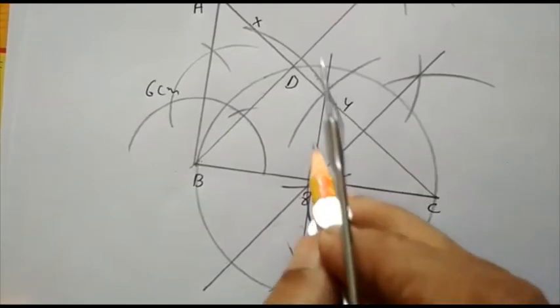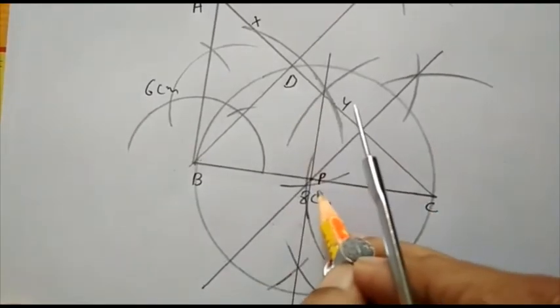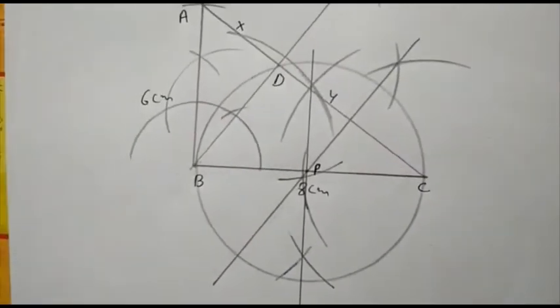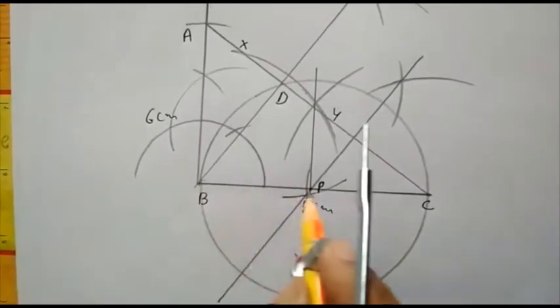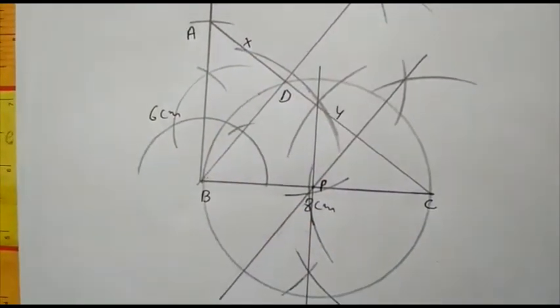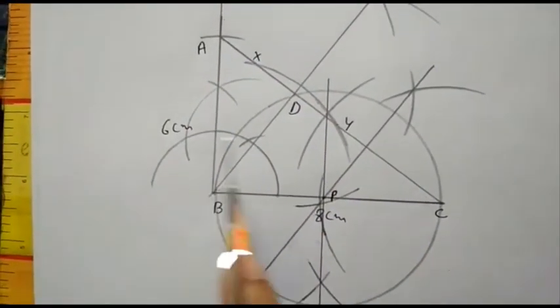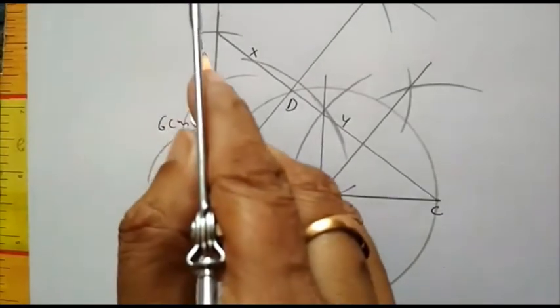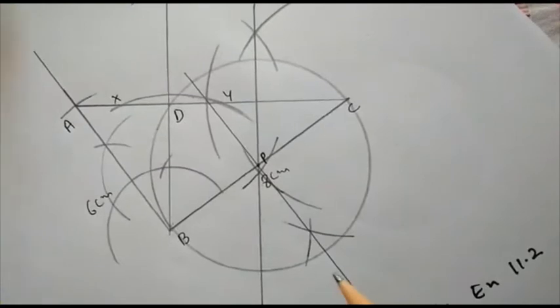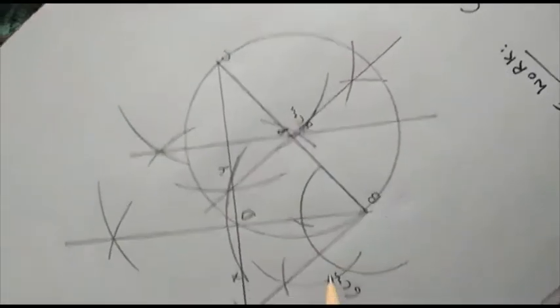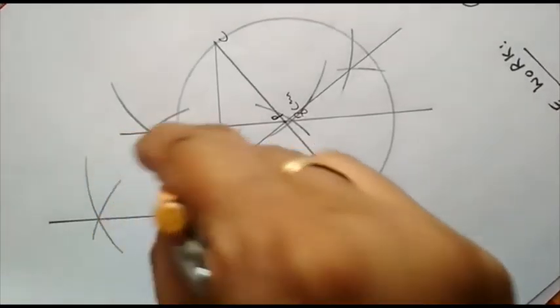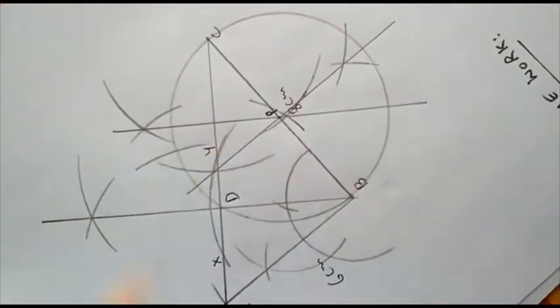We draw the circle by taking the perpendicular bisector of any two sides, and with the point of intersection P we draw the circle with radius PB, PC, or PD. It is equidistant. Now if we observe the figure, BP is the radius, and this angle is 90 degrees. It means AB is a tangent because BP is radius and AB is tangent at an angle of 90 degrees.